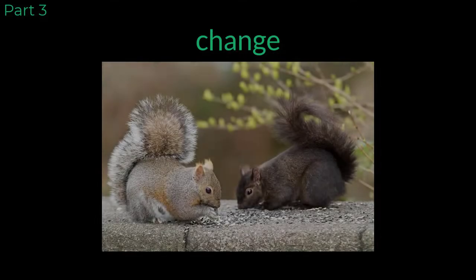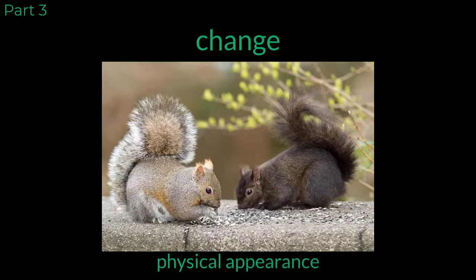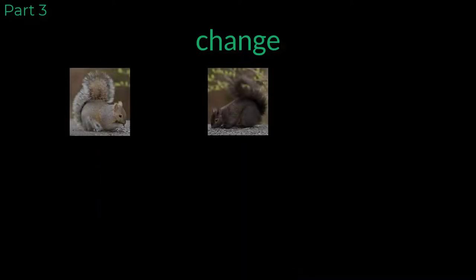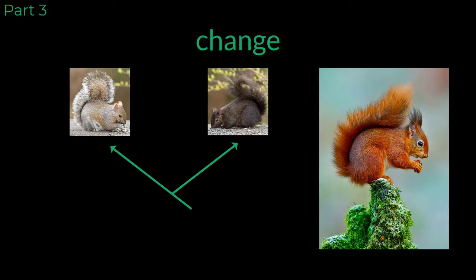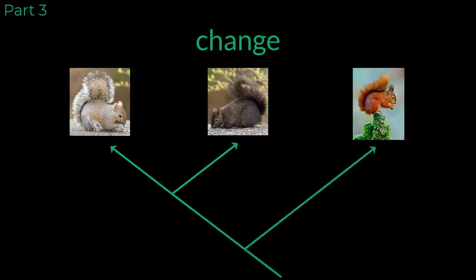Evolution is all about change, and some of the changes that generations of organisms go through can be seen in their physical appearance. Comparing physical changes can often hint at whether organisms are closely related to one another. In our squirrel scenario, we saw the population change over time with differences in fur color. Given enough time, these two color variants could lead to the creation of different species. But even so, these two squirrels would be more closely related to each other compared to, say, the Eurasian red squirrel. Based on the greater number of physical differences, we can infer that the Eurasian red squirrel shares a more distant common ancestor, as it takes time for these changes to develop.